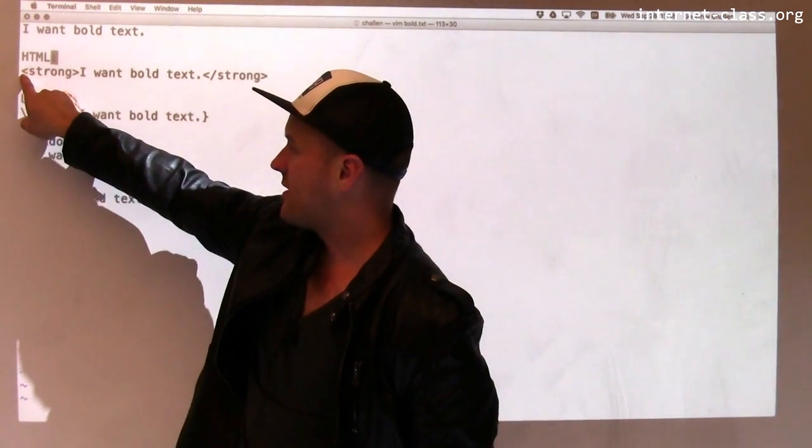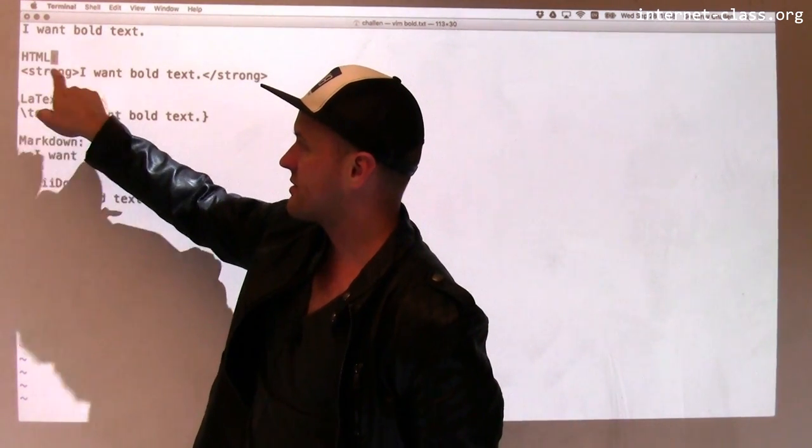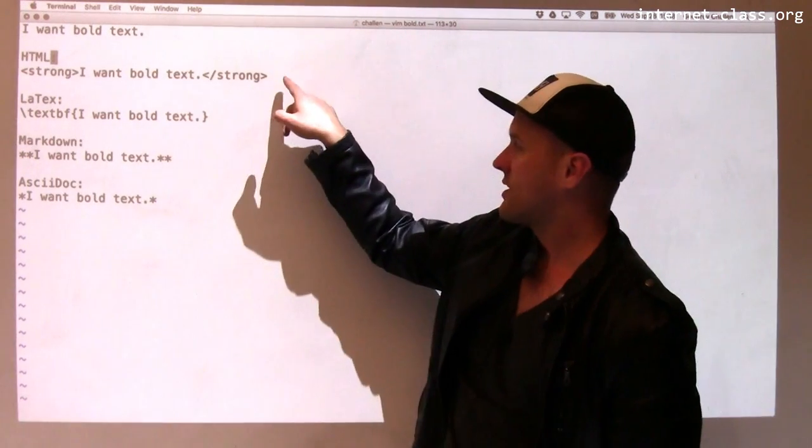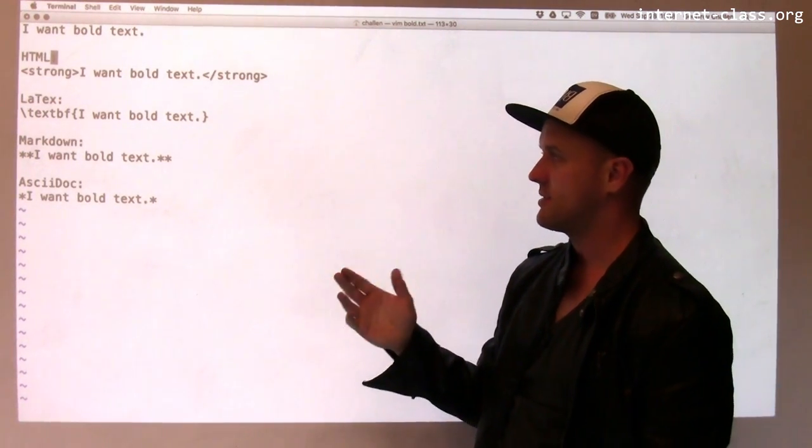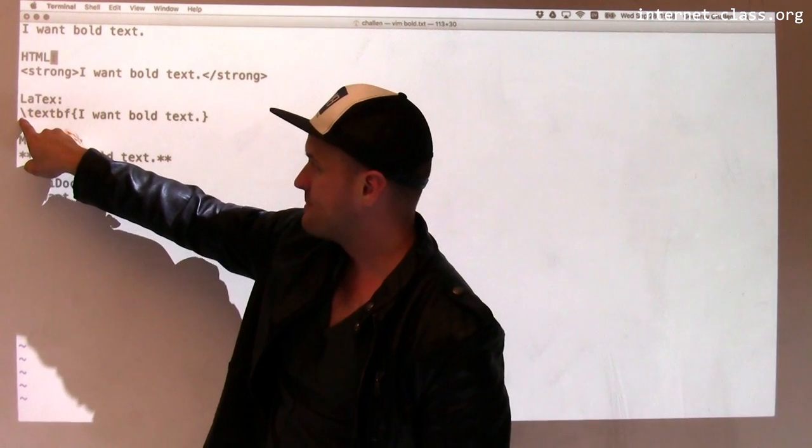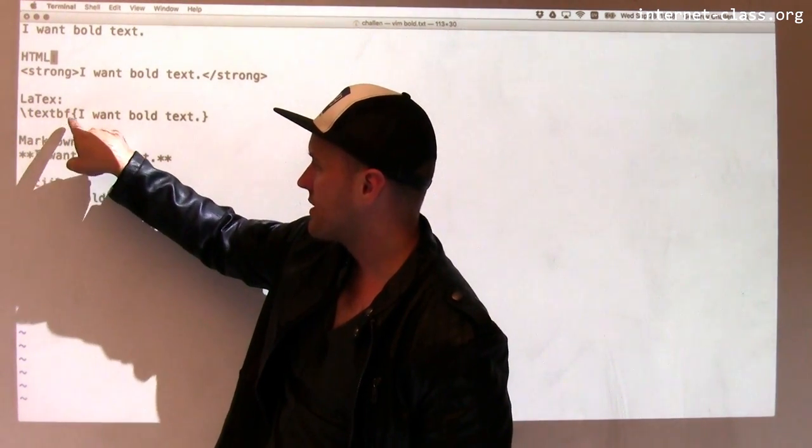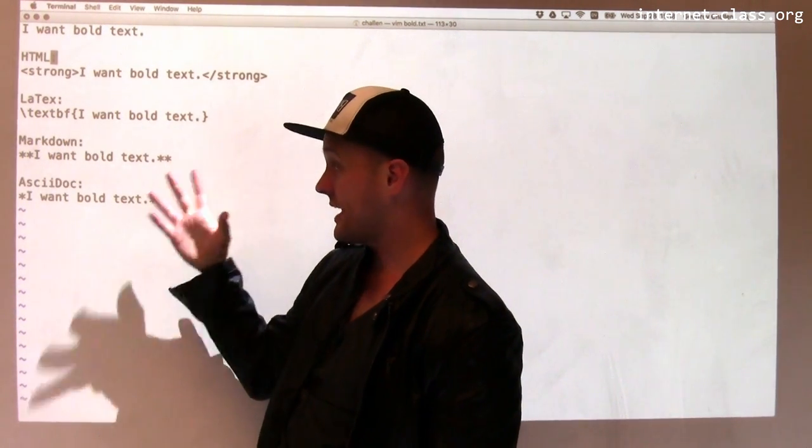So in HTML, I have strong, which is six characters plus the tag is eight. Over here, it's nine because I have to close the tag. So that's 17 extra characters I had to type to get bold text. In LaTeX, I had to type nine extra characters.